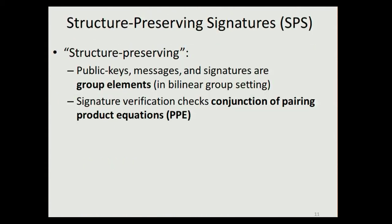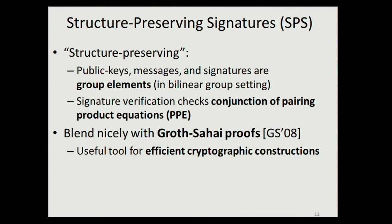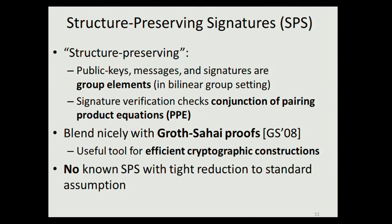Structure-preserving signatures have the special property that public keys, messages, and signatures are all elements from the same domain — usually group elements in a bilinear group setting — and verification checks a conjunction of pairing product equations. This is very useful because it allows combining structure-preserving signatures with Groth-Sahai proofs, giving a powerful tool for efficient cryptographic constructions like group signatures. Unfortunately, no existing structure-preserving signature scheme has a tight reduction to a standard complexity assumption, so we need to construct one.